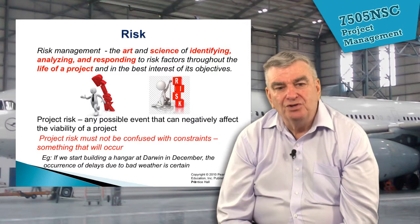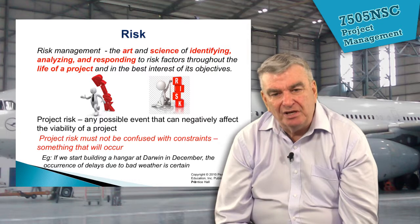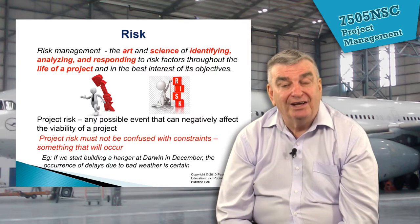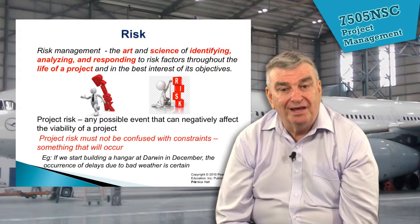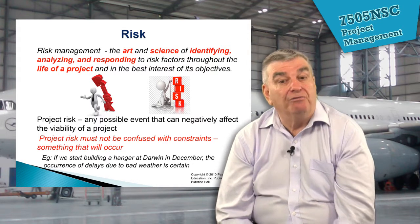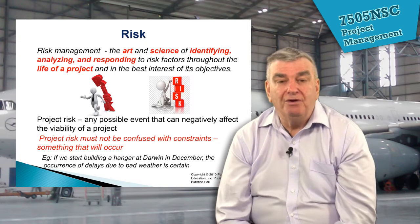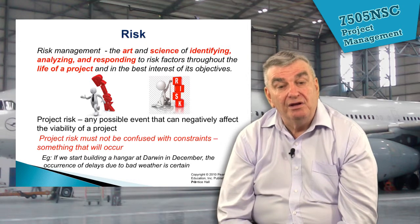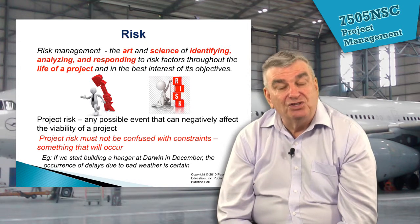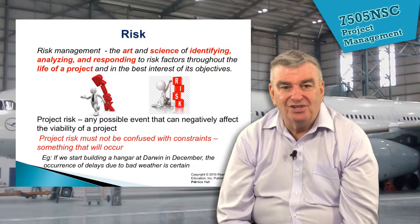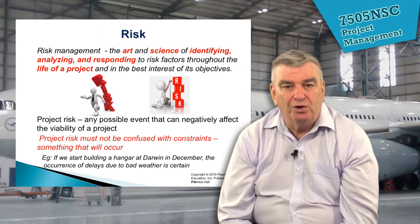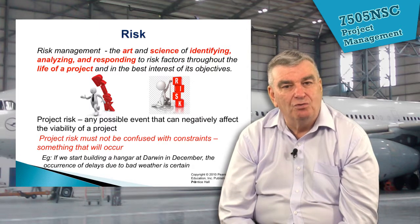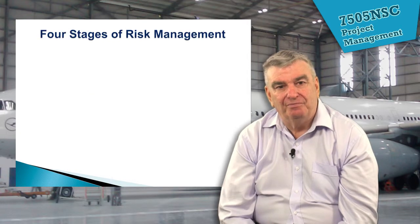Project risk is any possible event that can negatively affect the viability of the project. Project risk mustn't be confused with constraints. A constraint is something that is going to occur. For example, if you had to erect a hangar up in Darwin in February, we know that's the wet season — it's going to rain and put your work back. So that's a constraint, not a risk. It's going to happen.